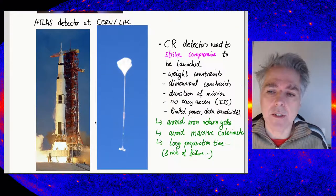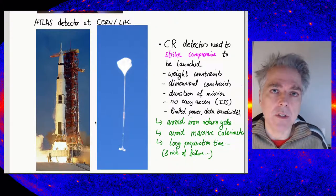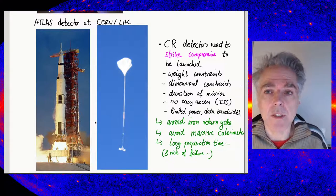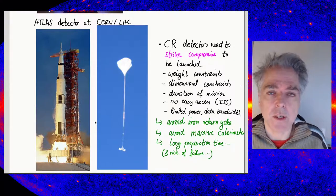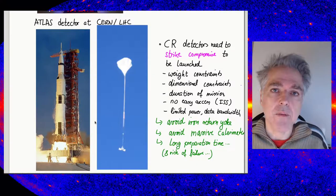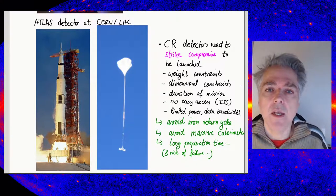For a cosmic ray detector that would operate above or at the edge of the atmosphere, you would rely on either a rocket which would bring this up to low Earth orbit, or a stratospheric balloon which would lift it to the upper stratosphere at about 40 kilometers. You need to strike a compromise because these are limited in terms of dimensions and mass.